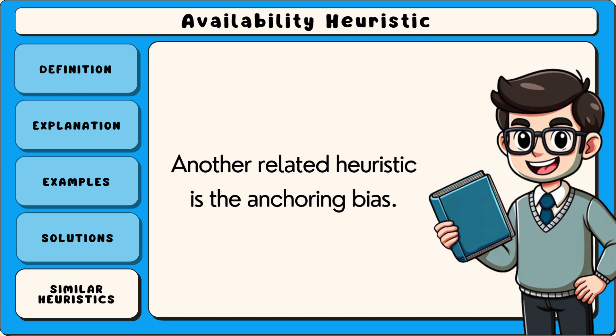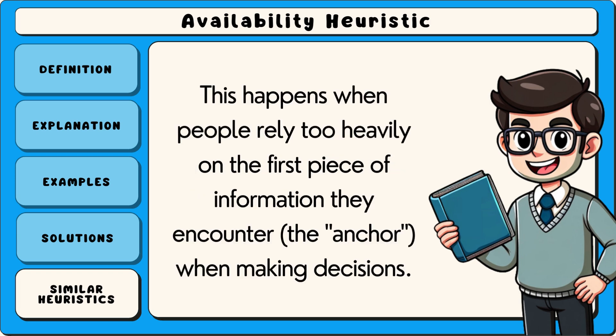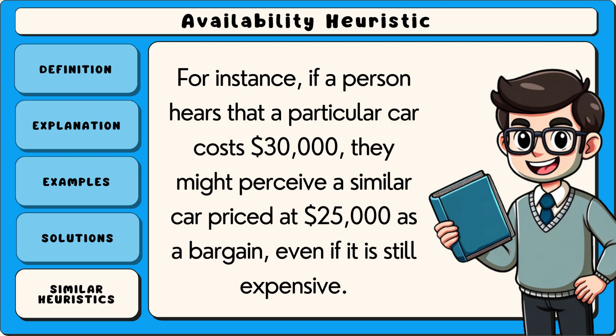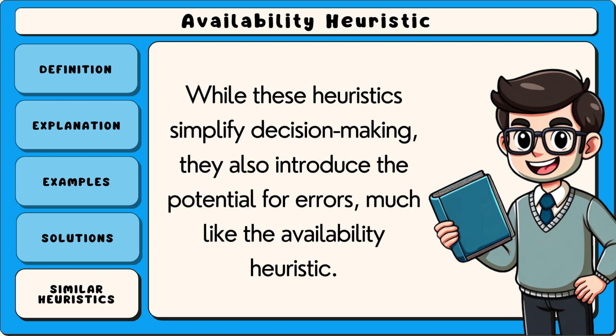Another related heuristic is the anchoring bias. This happens when people rely too heavily on the first piece of information they encounter — the anchor — when making decisions. For instance, if a person hears that a particular car costs $30,000, they might perceive a similar car priced at $25,000 as a bargain, even if it is still expensive. While these heuristics simplify decision making, they also introduce the potential for errors, much like the availability heuristic.